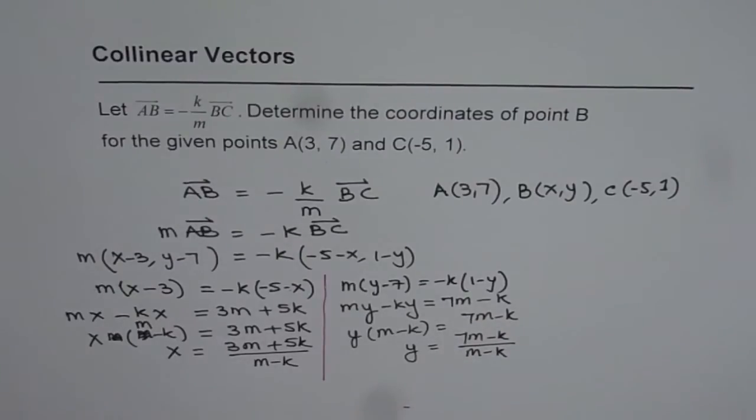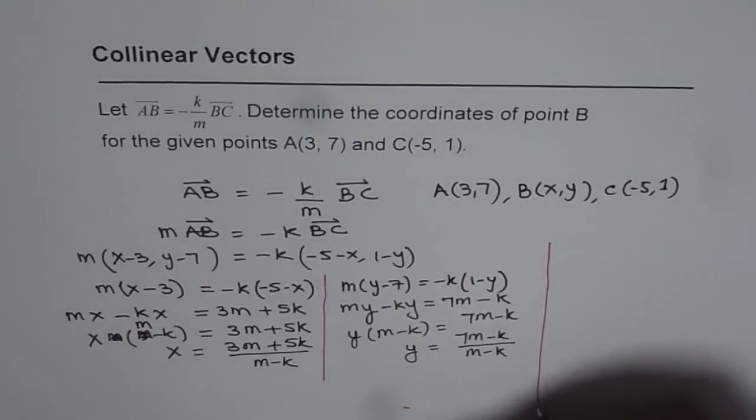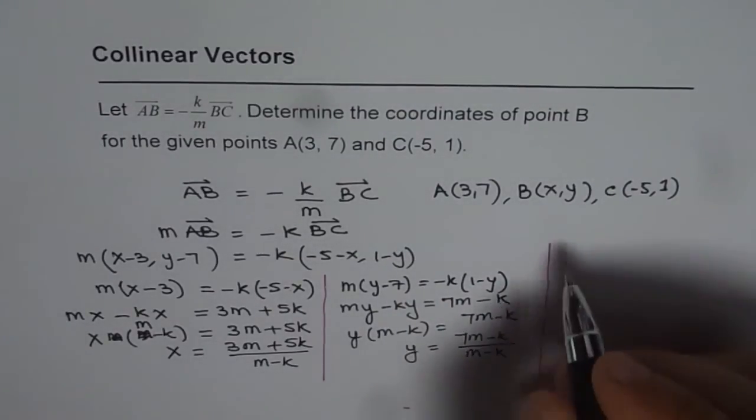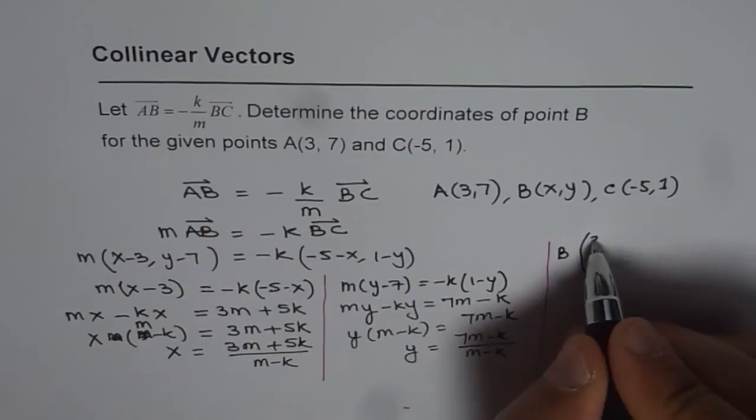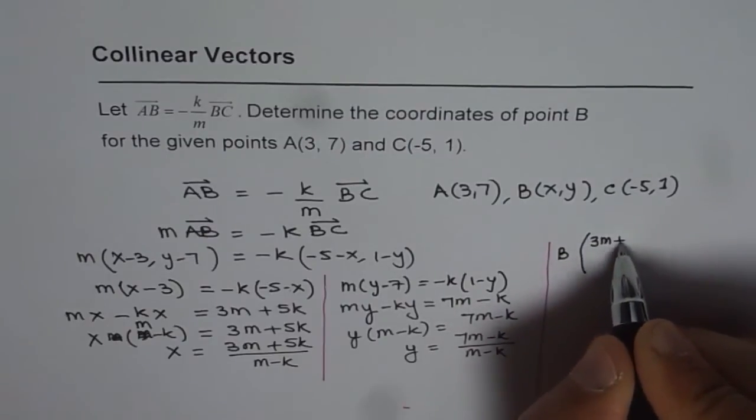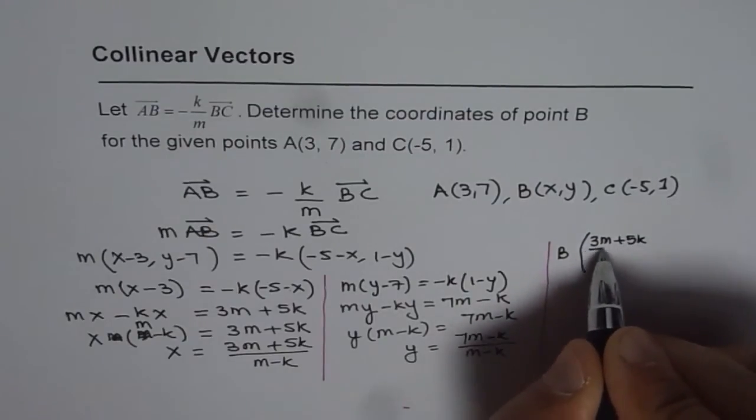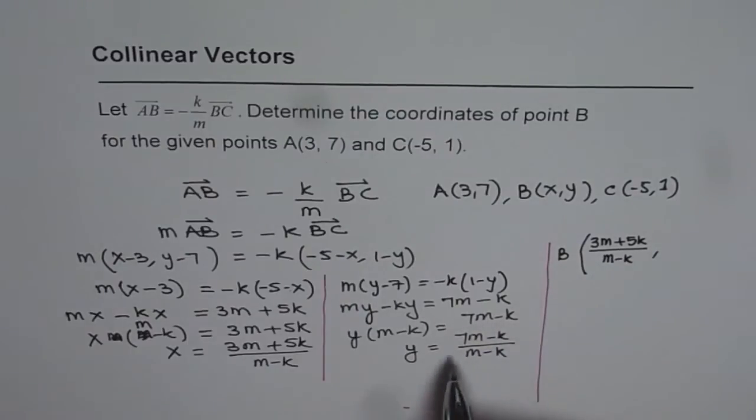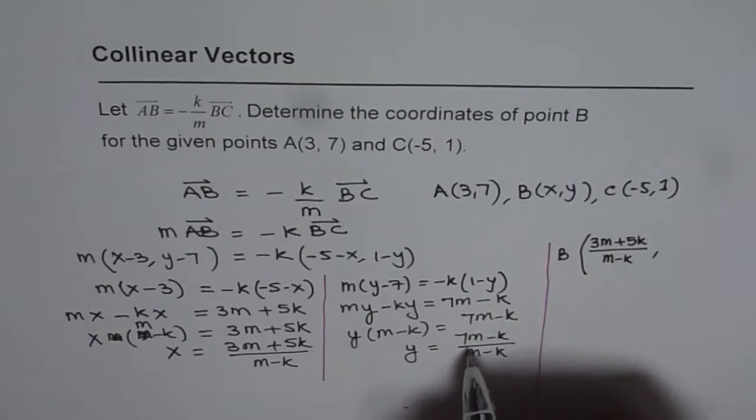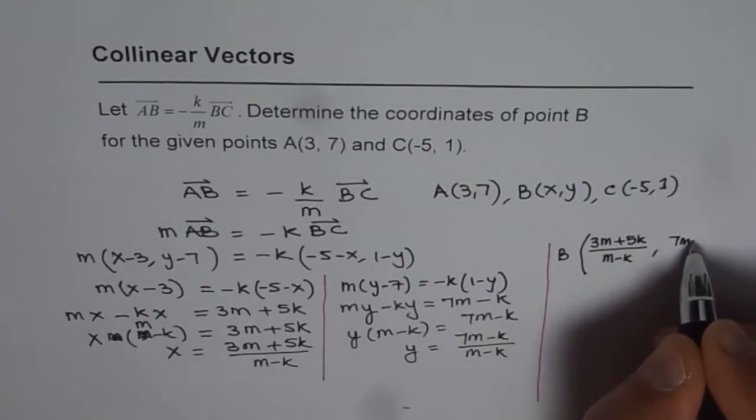So that gives us the value of X and Y coordinates. What we basically have here is our solution. Point B should be X value (3M plus 5K)/(M minus K), and the Y value (7M minus K)/(M minus K).